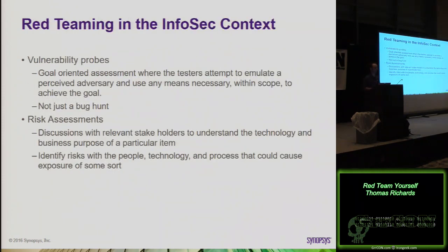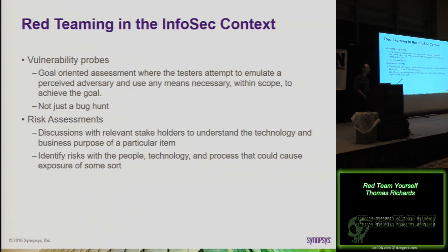In more of an InfoSec context, we're talking about vulnerability probes — and we're going to take it above what folks are already doing with goal-oriented assessments. We're not just going to look at the broad scope of your network; we're going to have a goal: can we get domain admin, can we get to your financial database, can we get to your customer database? The assessors will attempt to emulate a perceived adversary and use any means necessary within scope to achieve that goal. On a red team, I am not trying to find all the vulnerabilities on your network — I am trying to achieve that goal. Bugs will be found in people, process, and technology, but the goal is not to find the most bugs.